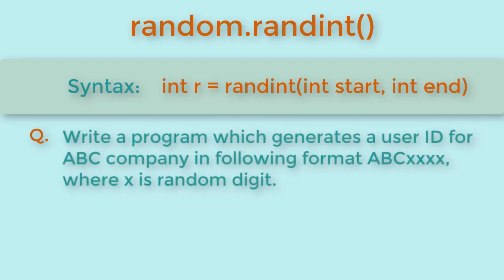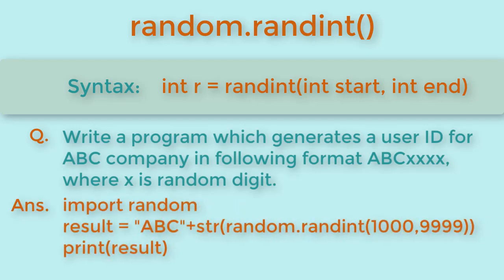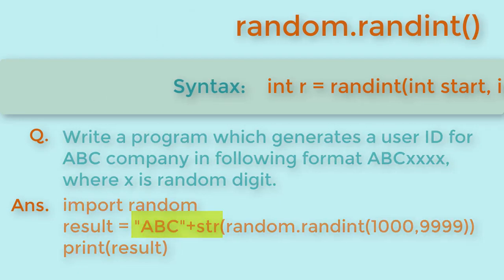Similar question could be to write a program which generates a user ID for ABC company in following format ABC followed by four digits where x is a random digit. Here you will first include the library and then call randint function from 1000 to 9999 and then convert the output to string to combine with ABC and then return the value.